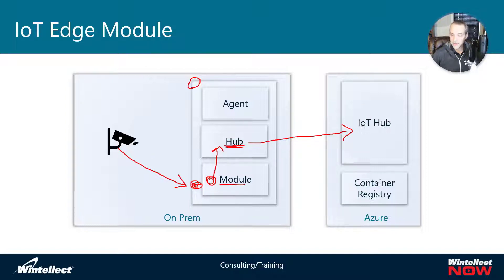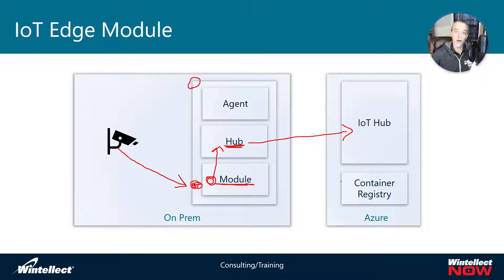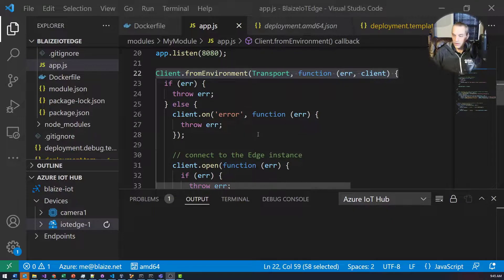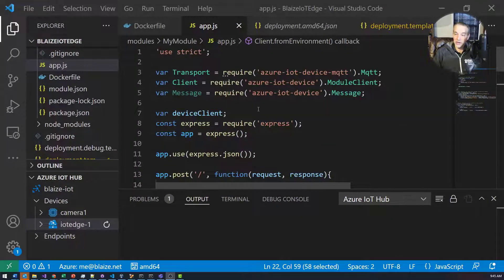I want to look at the proxy code providing translation and filtering, then look at the routes I'm putting into this module to allow it to send data up to the hub. We'll see the data flow from a device simulator, through the module, encapsulated and sent up to the hub, just like we see in the flow on screen right now.